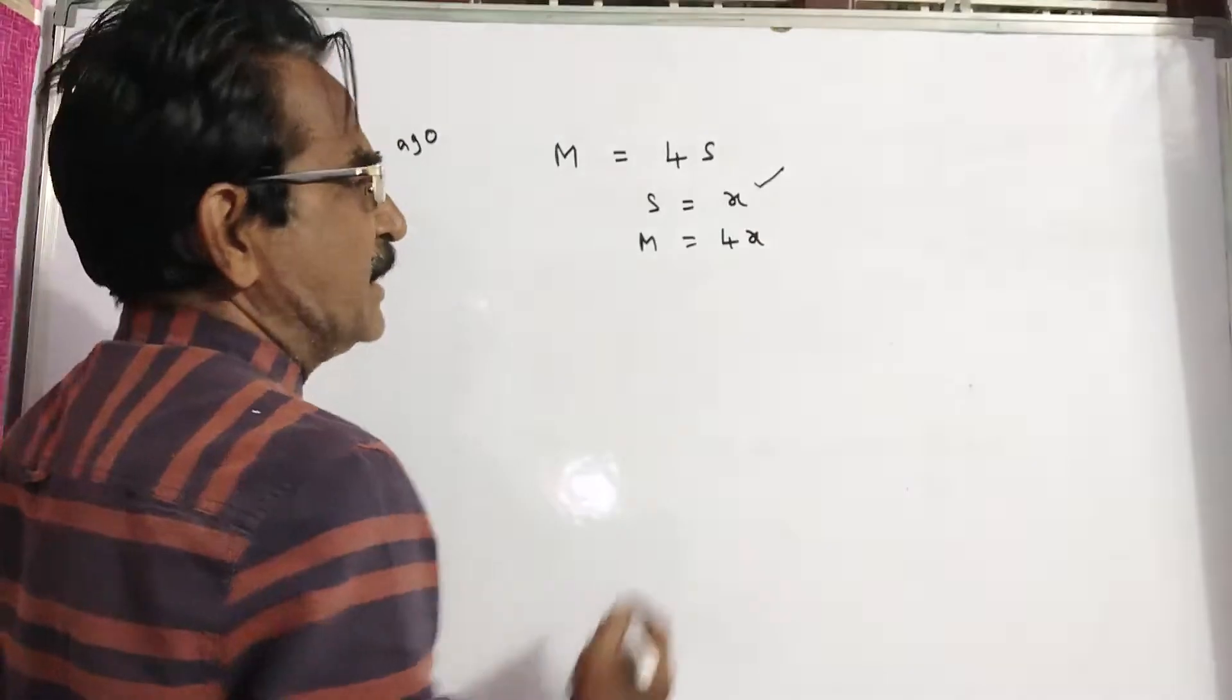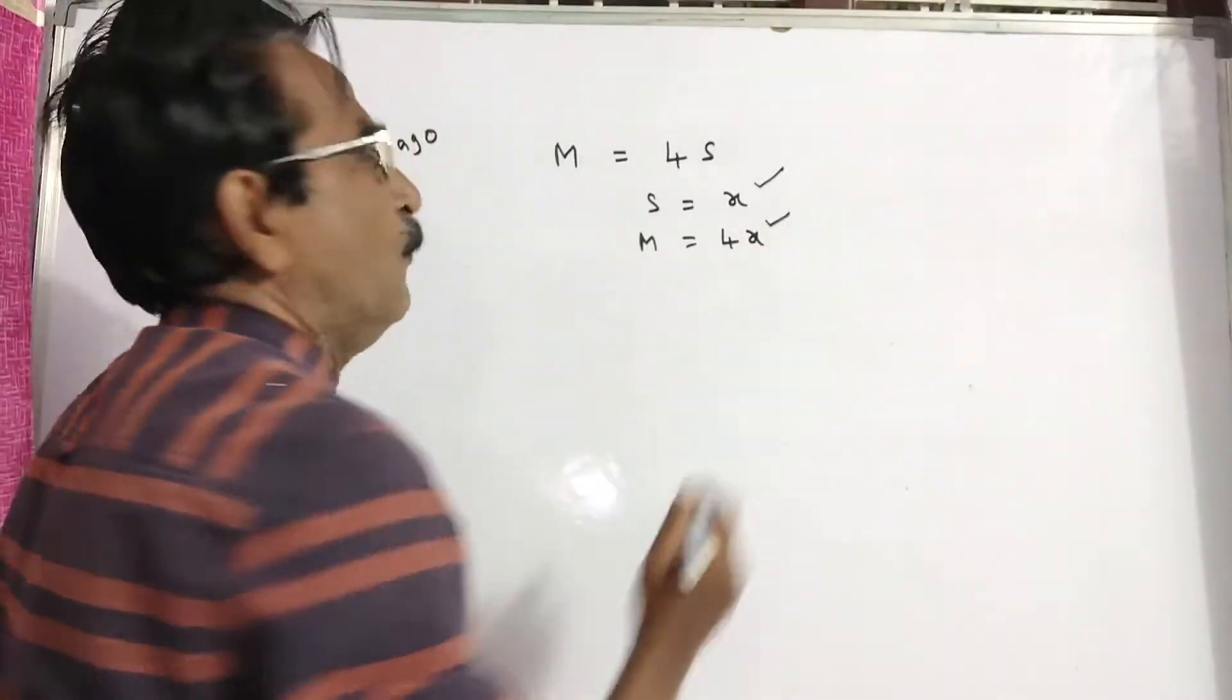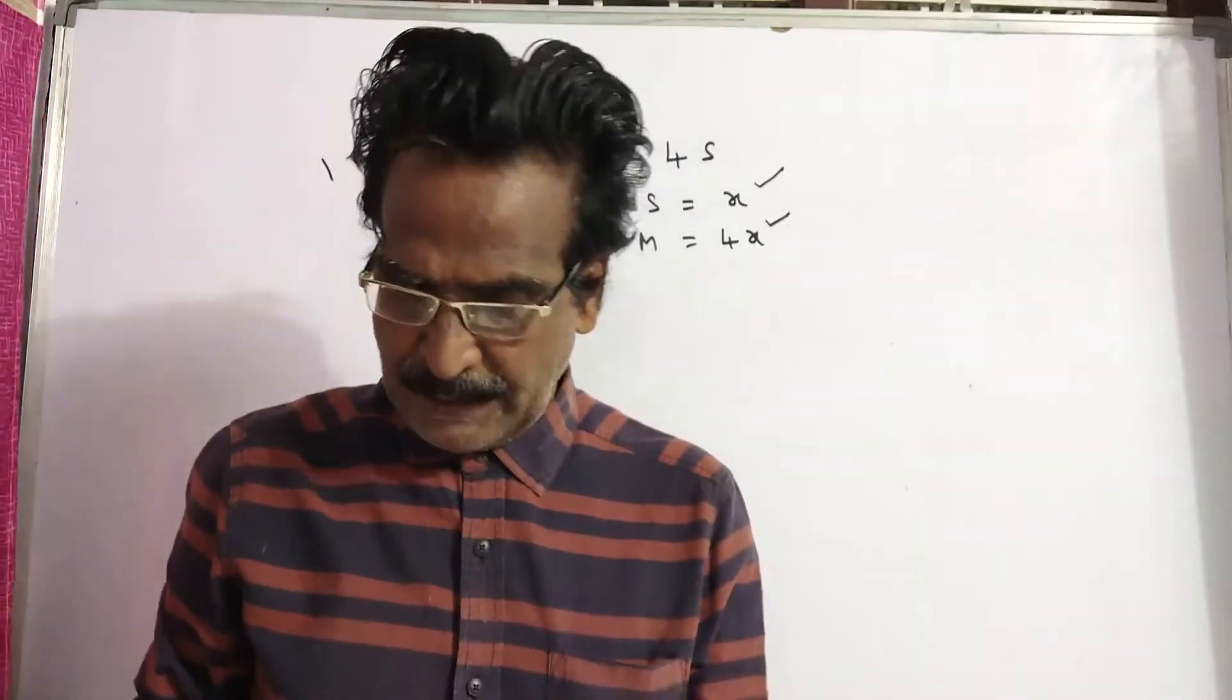If son is equal to X, man will be 4X. Let us see afterwards.